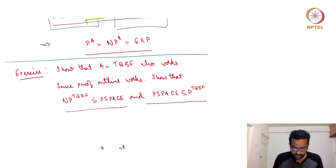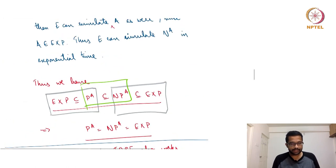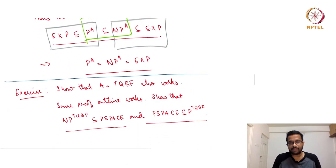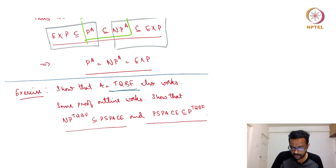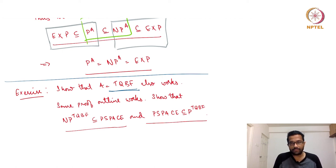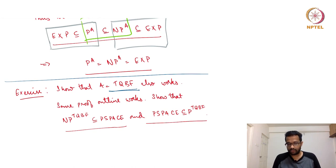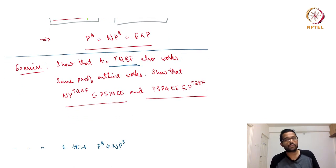There is one more thing worth mentioning: instead of an EXP-time oracle A, another option that works is a PSPACE-complete language like TQBF. You could show that NP^{TQBF} ⊆ PSPACE and PSPACE ⊆ P^{TQBF}, giving the sandwich: PSPACE ⊆ P^{TQBF} ⊆ NP^{TQBF} ⊆ PSPACE. Hence P^{TQBF} equals NP^{TQBF}. I leave it to you to work out the details of this particular proof.